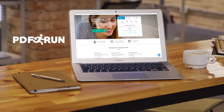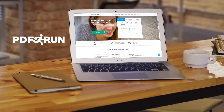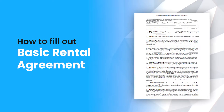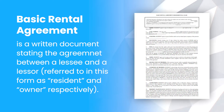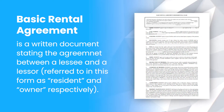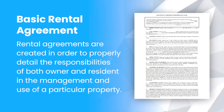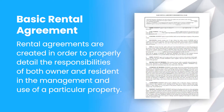Welcome to PDF Run. In this video, we'll guide you on how to fill out a basic rental agreement. A basic rental agreement is a written document stating the agreement between a lessee and a lessor, referred to in this form as resident and owner, respectively. Rental agreements are created in order to properly detail the responsibilities of both owner and resident in the management and use of a particular property.